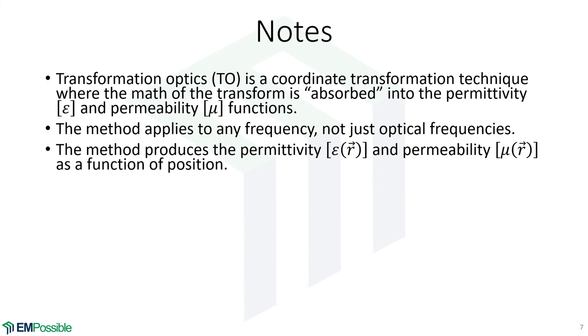At the output, we get a permittivity and we get a permeability that's a function of position. Those are changing as a function of position. How we realize those values of permittivity and permeability is also different as a function of position. This is something we need to consider when we build the overall lattice so that we don't have any discontinuities or anything like that.